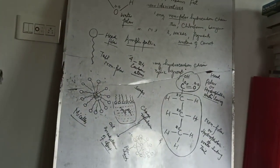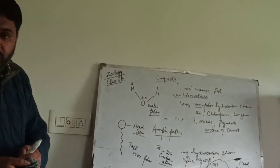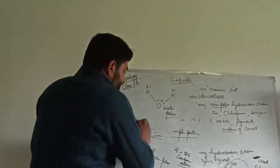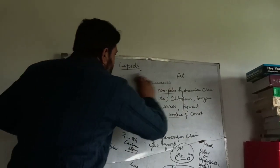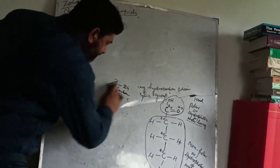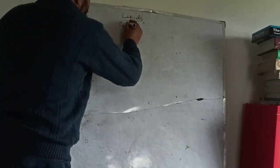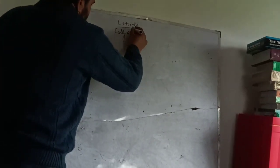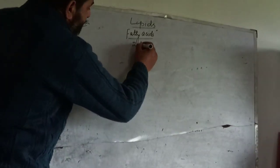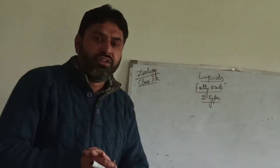These lipids are mainly composed of fatty acids, and fatty acids are amphipathic substances having both polar and nonpolar parts. Now these lipids are mainly of two types based on the fatty acids, because fatty acids form the backbone of lipids. These fatty acids are mainly of two types depending upon the presence or absence of double bonds.